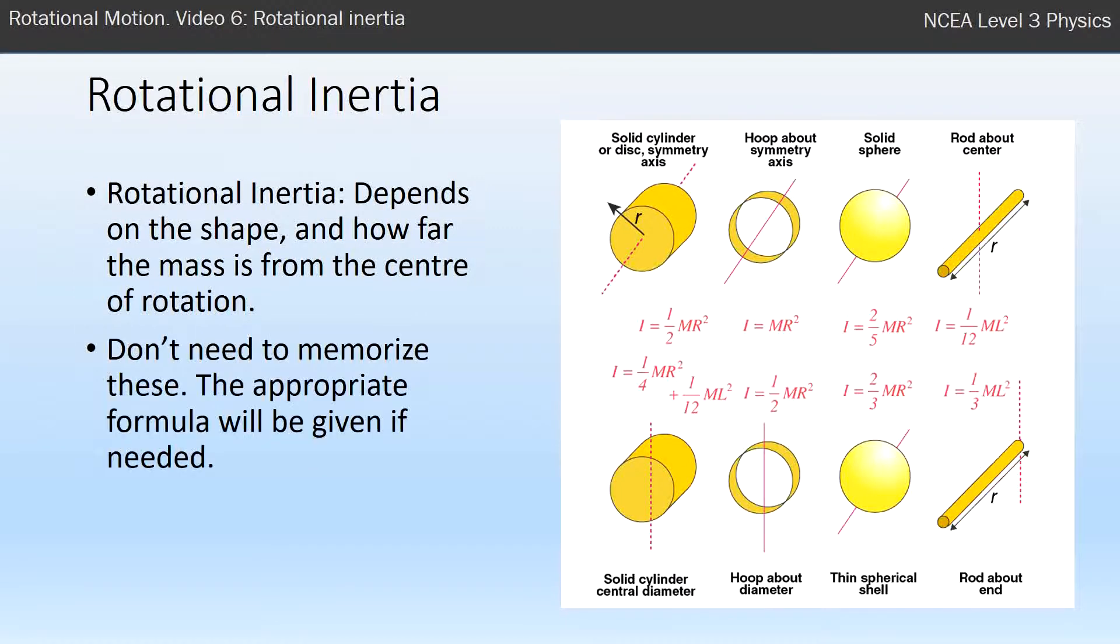Here is a table of formulas that you do not need to memorize. If you are asked to calculate anything using one of these formulas, you will be given the appropriate formula. But this table just shows that different shaped objects have different rotational inertia.